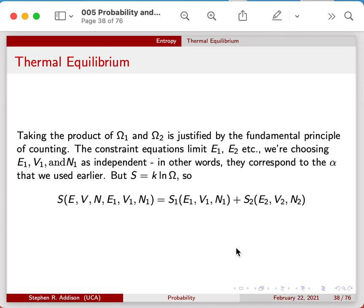As I said, we prefer to use logarithms. So using S equals k times the logarithm of omega, we can now write an expression for the composite entropy.